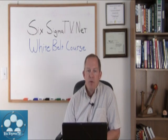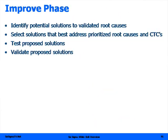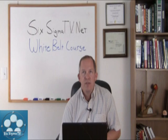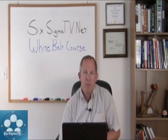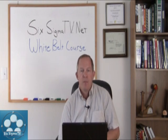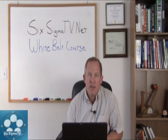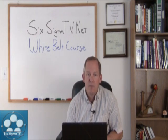What we want to get out of the improve phase: identify potential solutions to validated root causes — the ones we came up with in the analyze phase that we validated are in fact root causes — and prioritize those. We're going to find solutions that best address the prioritized root causes as they relate to the CTCs, or critical to customer requirements, from the define phase. Then we'll test and validate those proposed solutions.